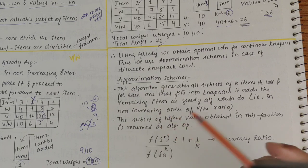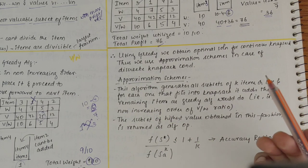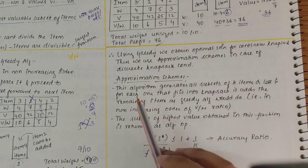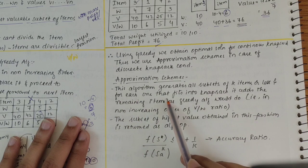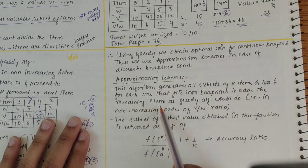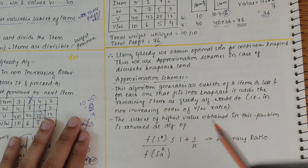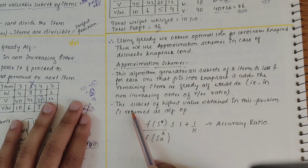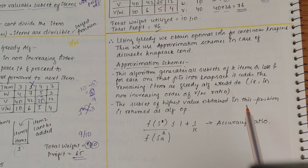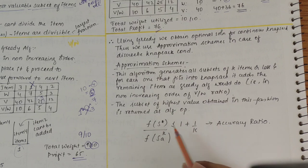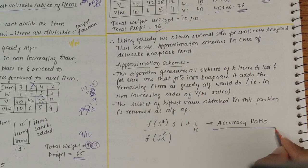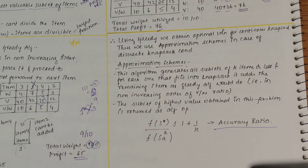For discrete condition, we need approximation schemes. The first approximation scheme was suggested by Sahni in 1975. This algorithm generally generates all subsets of K items or less, and for each one that fits into knapsack, it adds the remaining items as greedy algorithm would do, in non-increasing order of V by W ratio. The subset of highest value obtained is returned as output.